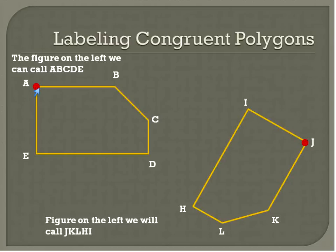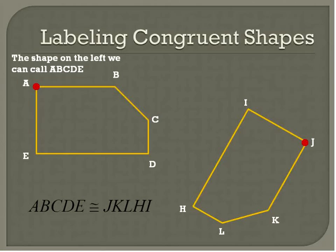So figure one or polygon number one, we started here and we went A, B, C, D, E. We're going to do the same thing here, J, K, L, H, I. And that is how we would label it. And this is how we would say that they are congruent. These are congruent polygons. A, B, C, D, E is congruent to J, K, L, H, I.